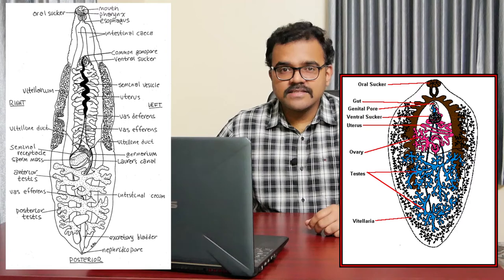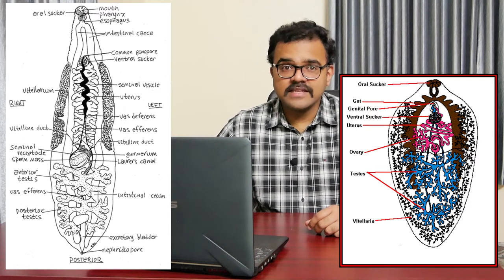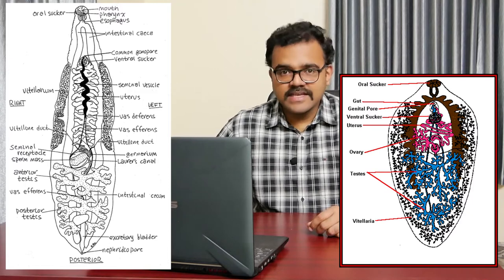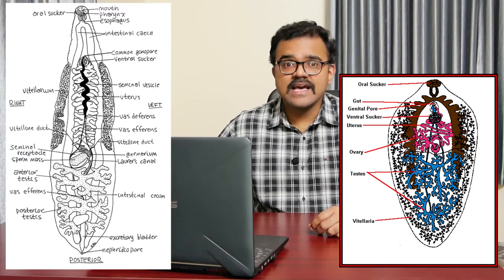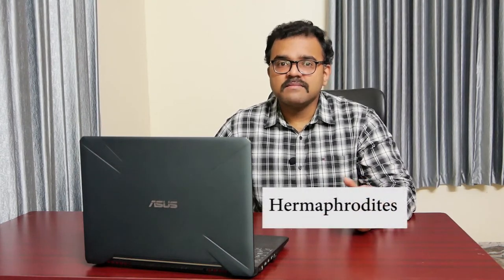The digestive system consists of a mouth, pharynx, and a bifurcated intestine which is highly branched. The excretory system consists of longitudinal excretory canals and the associated flame cells. Fasciola Hepatica reproduces sexually; the adults are hermaphrodites, but cross-fertilization is the rule.